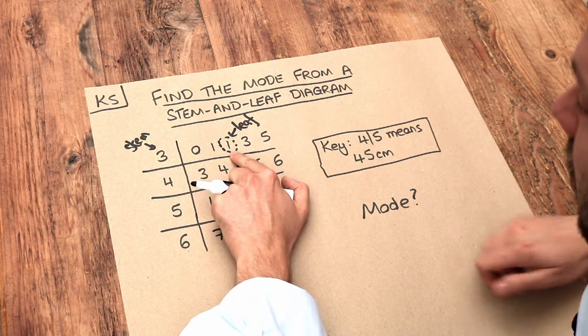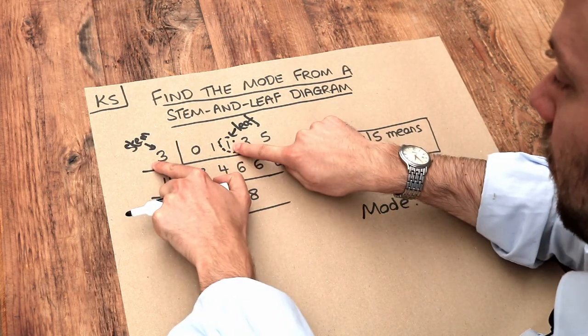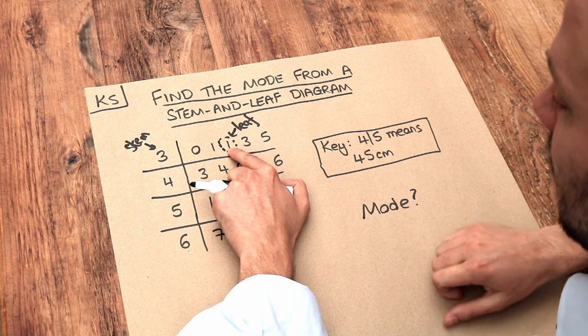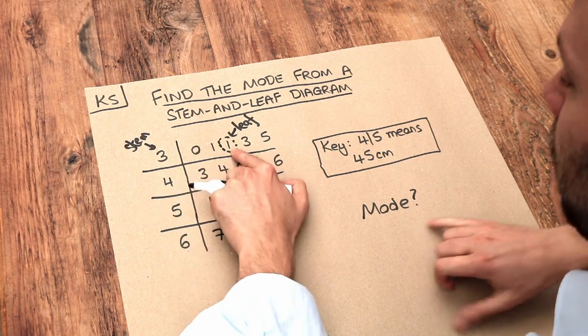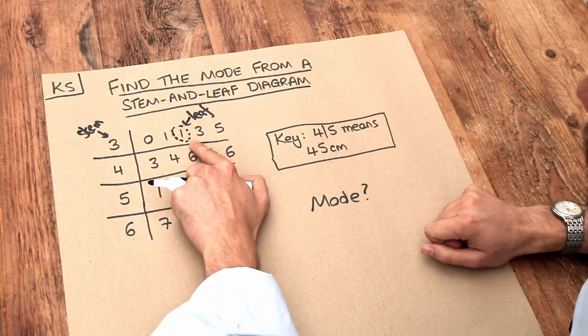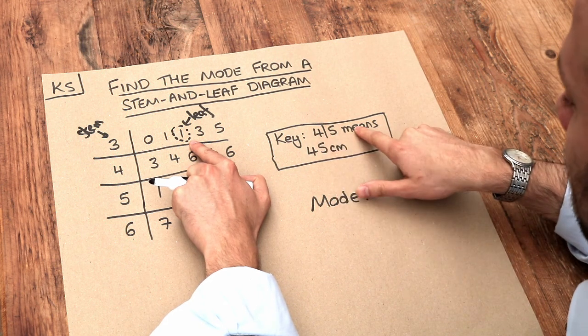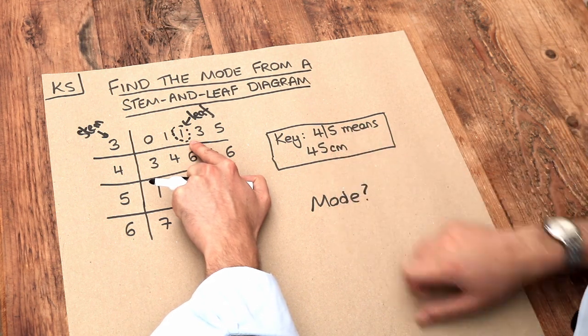So if we look at this particular number here, because the stem there is 3 with the first digit, and that 1 is the second digit, it means we have 3 and 1. Now our key tells us how to interpret that number. So 3, 1 would mean 31 centimeters.